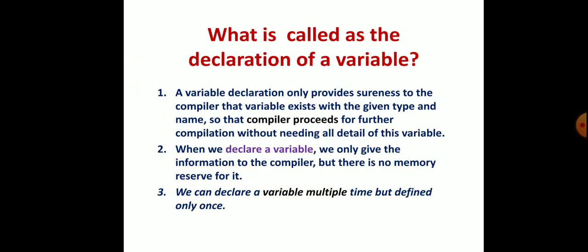What is called the declaration of a variable? How can we declare the variable and what is that? So far you know what it is, but in the way of interviews, how you can give a keyword is what we are trying to deliver here. A variable declaration only provides assurance to the compiler that the variable exists.